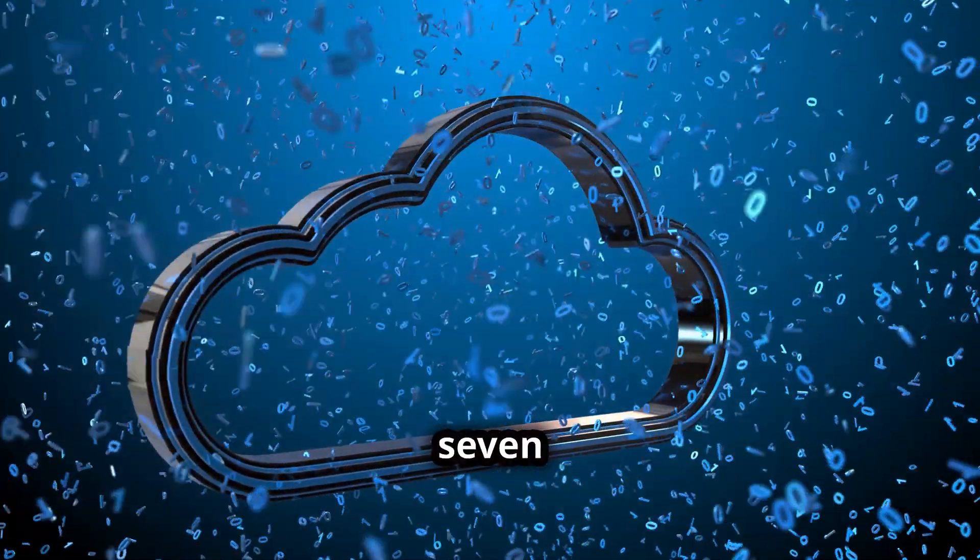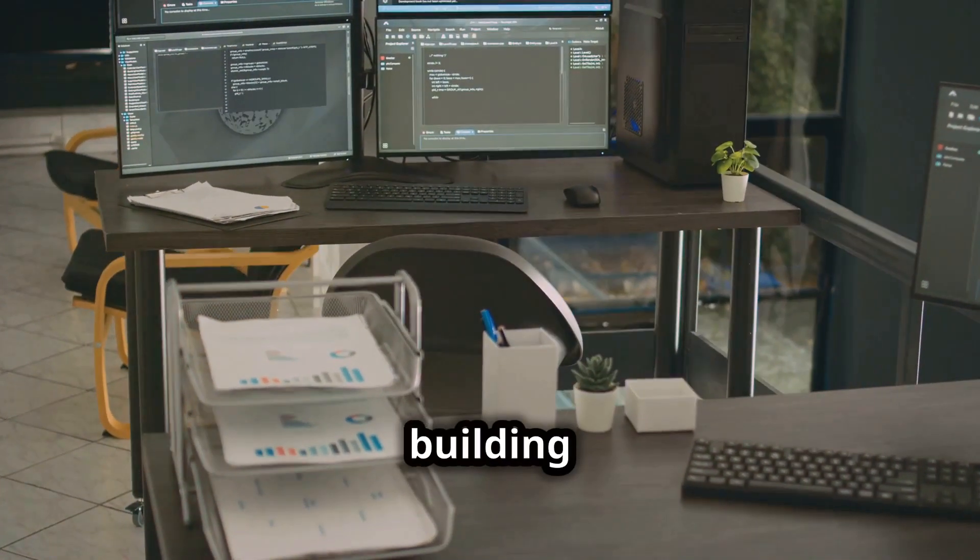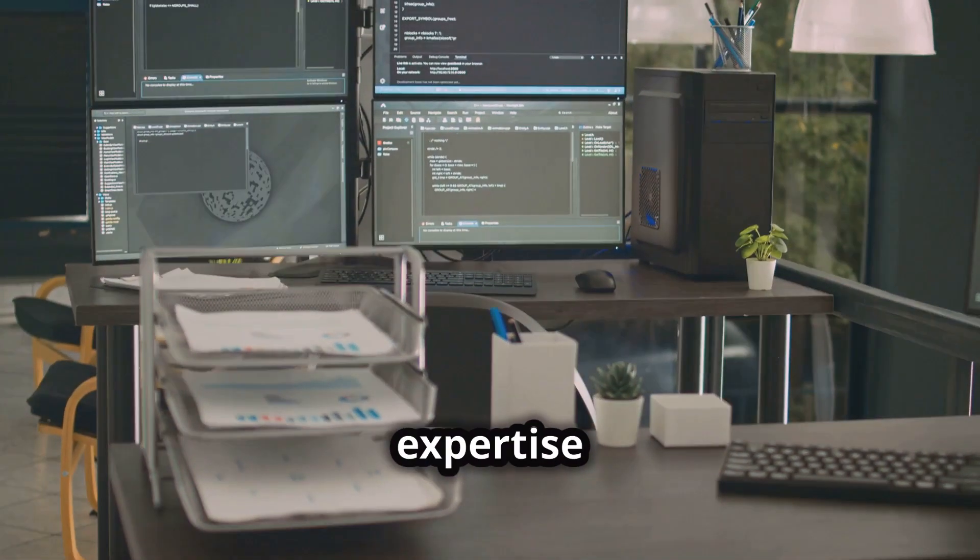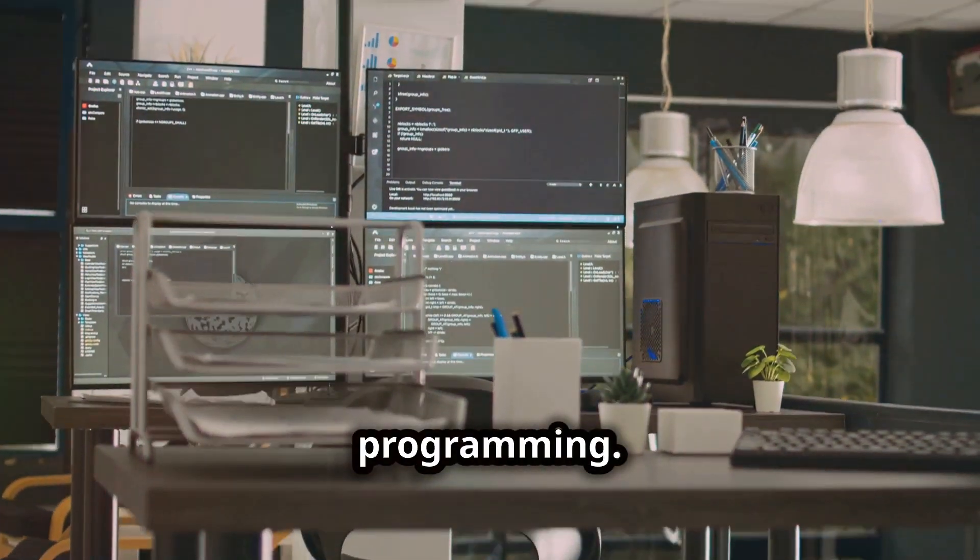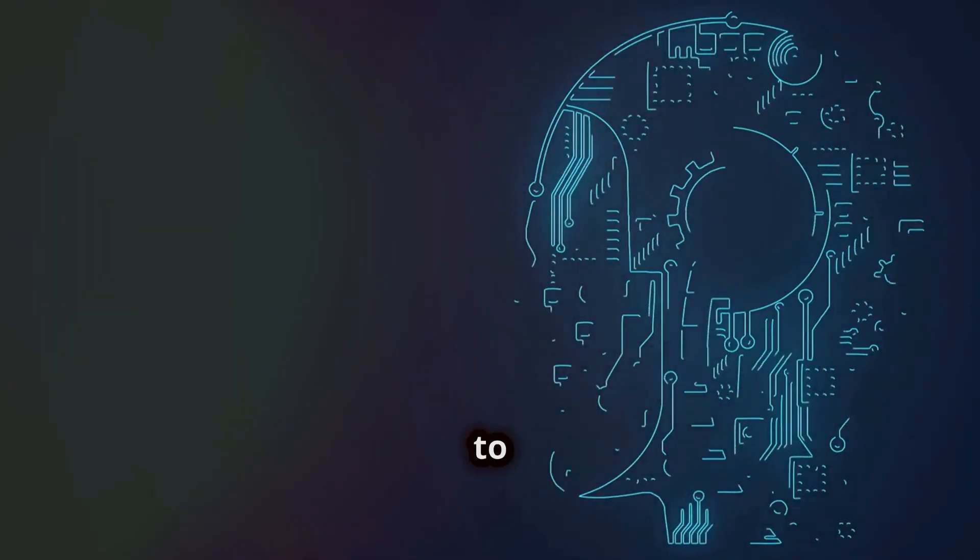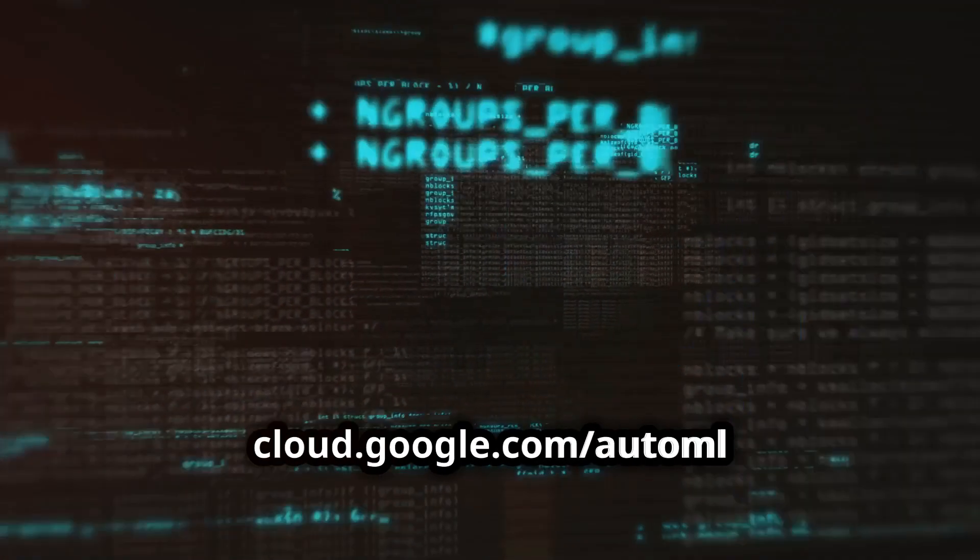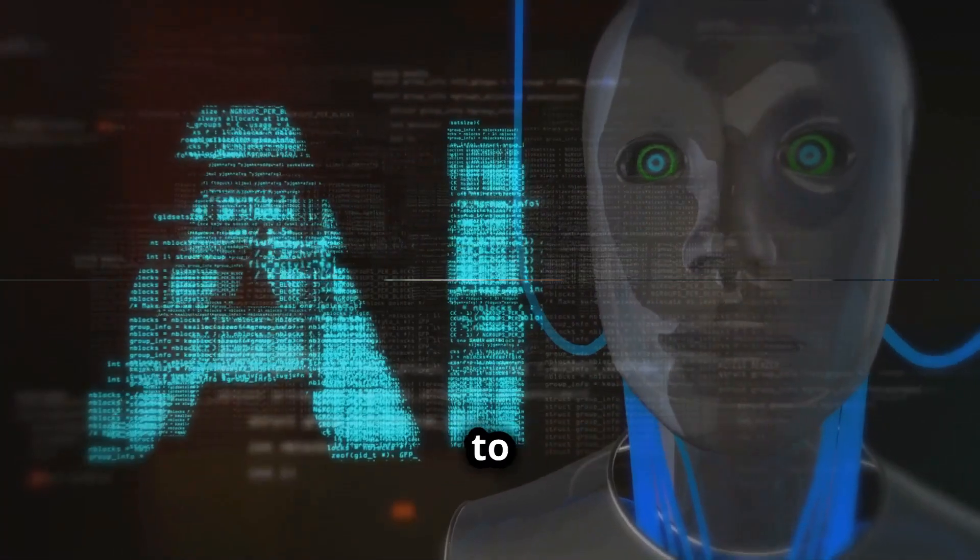Number 7. Google Cloud AutoML. This tool democratizes machine learning by providing tools for building custom models without extensive expertise in data science or programming. With its user-friendly interface and automated workflows, AutoML empowers businesses to develop AI solutions tailored to their unique needs. Visit cloud.google.com/AutoML to learn more.